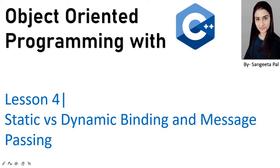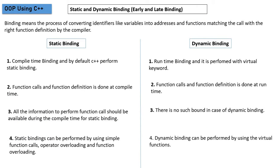In object-oriented programming with C++, the next topic is dynamic binding and static binding. So what is binding? Binding means the process of converting identifiers — identifiers are like variables. For example, 'int a = 10' — here 'a' is the variable. Binding means connecting that variable to an address, so that when we run the program we can access or change the value.